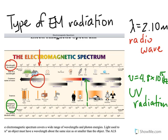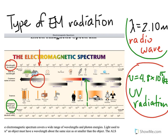And that's how to use the electromagnetic spectrum table to identify what type of electromagnetic radiation it is, depending on whether or not you're given the wavelength or the frequency. I'll talk to you guys soon.